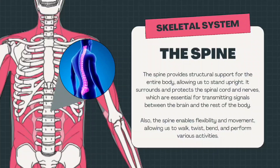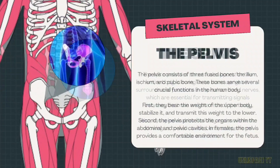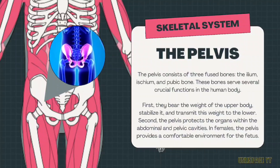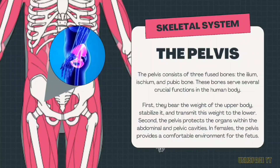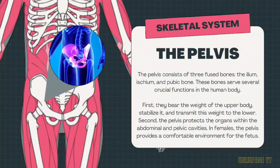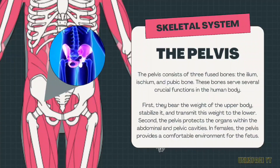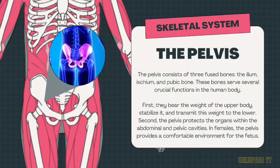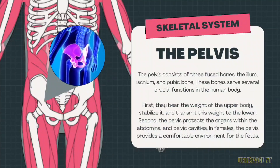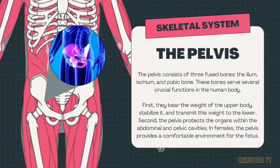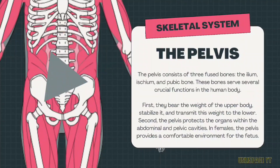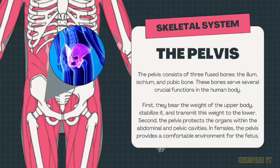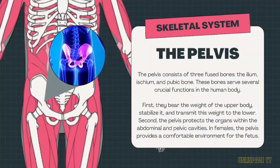The pelvis consists of three fused bones: the ilium, ischium, and pubic bone. These bones serve several crucial functions in the human body. First, they bear the weight of the upper body, stabilize it, and transmit this weight to the lower body. Second, the pelvis protects the organs within the abdominal and pelvic cavities. In females, the pelvis provides a comfortable environment for the fetus.